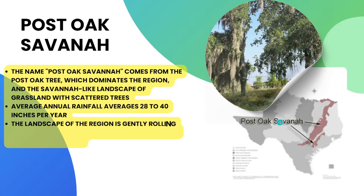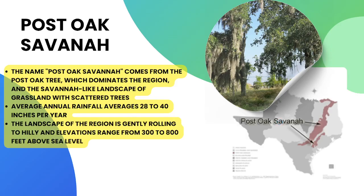The next region is the Post Oak Savanna, deriving its name from the post oak tree that dominates the region and its savanna-like landscape of grasslands with scattered trees. Average annual rainfall is 28 to 40 inches per year. The landscape is gently rolling to hilly, and elevations range from 300 to 800 feet above sea level — we're beginning to see the land slope generally upwards toward western Texas.